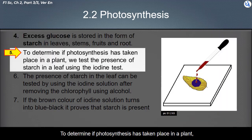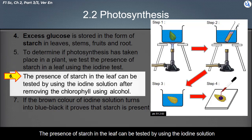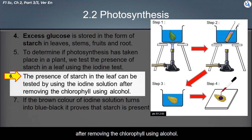To determine if photosynthesis has taken place in a plant, we can test for the presence of starch in a leaf using the iodine test. The presence of starch can be tested using iodine solution after removing the chlorophyll using alcohol.